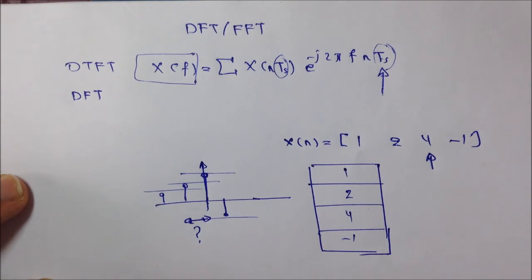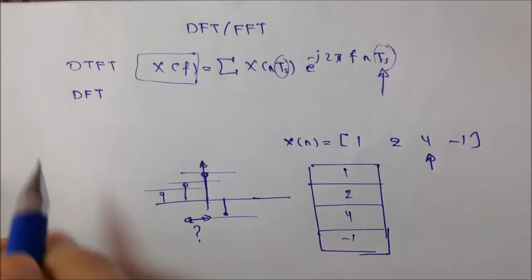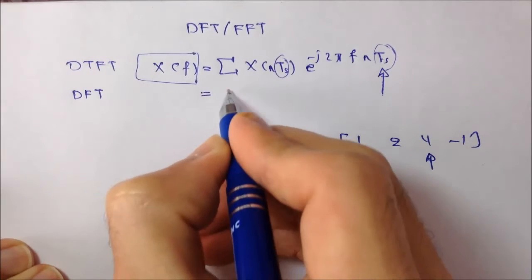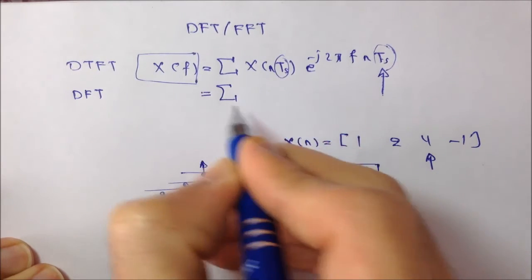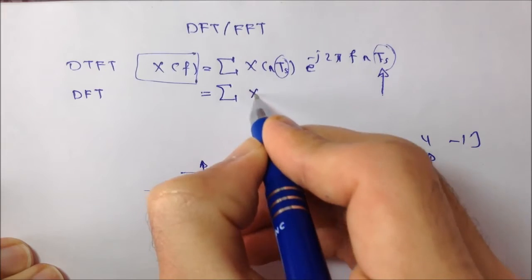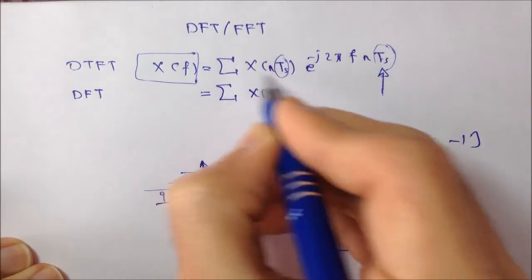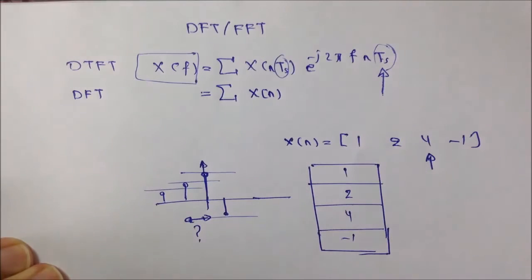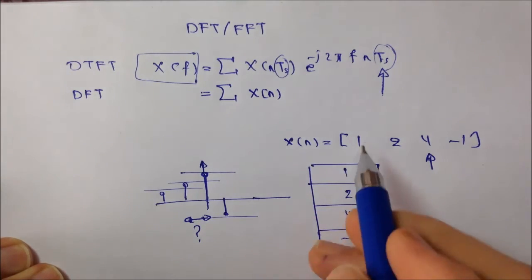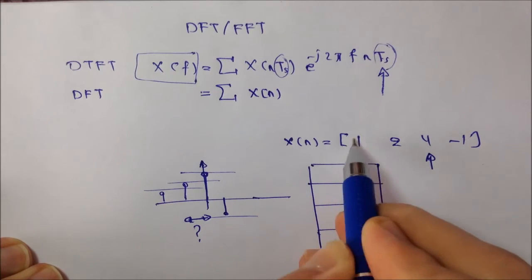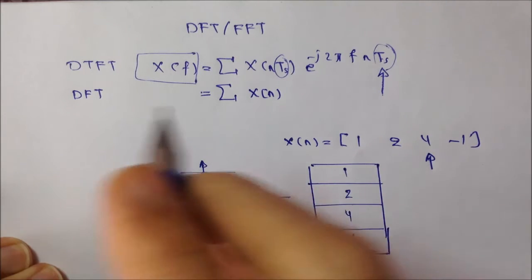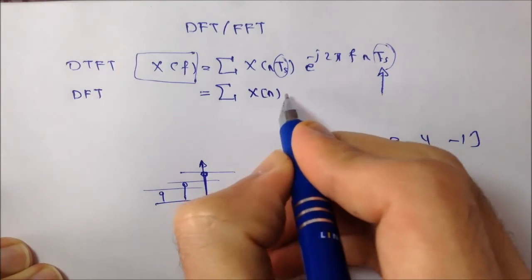We shall call it the normalized spectrum. So, here comes the definition of the discrete Fourier transform. Let's define it as summation X(n). So, instead of X(n)Ts, we have X(n), which is a pure discrete signal that lacks any sensation of time, just pure numbers like this sequence 1, 2, 4, minus 1. It doesn't have any relation to time.